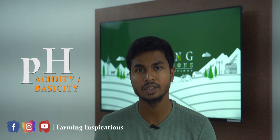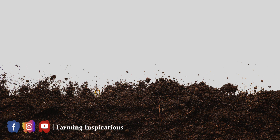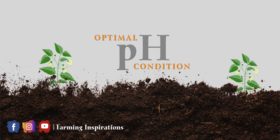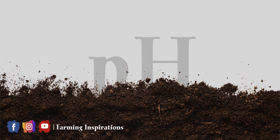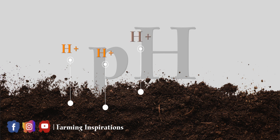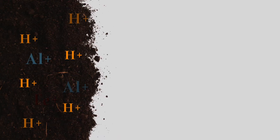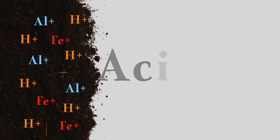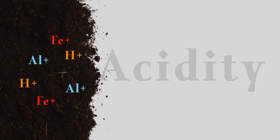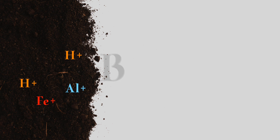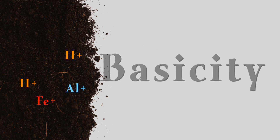Generally, pH of a soil is a measure of its acidity or basicity. Soil should be ensured with an optimal condition of pH for better crop growth and development. Soil pH is greatly determined by the concentration of hydrogen ions, and also indirectly influenced by the presence of aluminium and iron ions. A higher concentration of these ions indicates a lower pH and greater acidity, while a lower concentration signifies a higher pH and greater basicity.